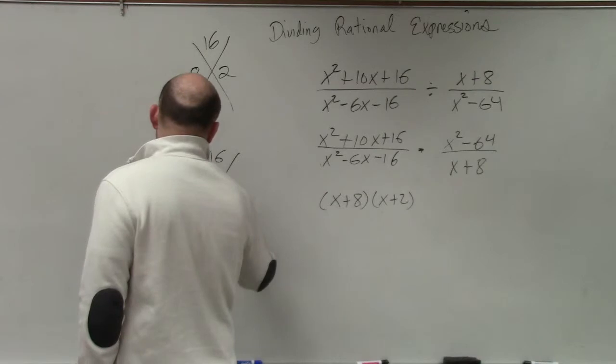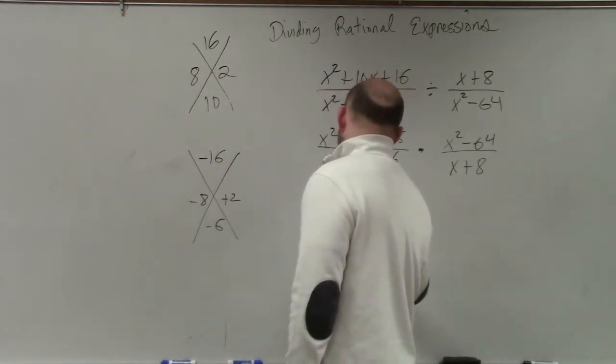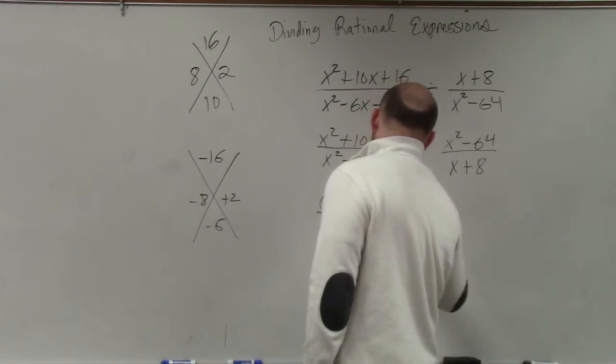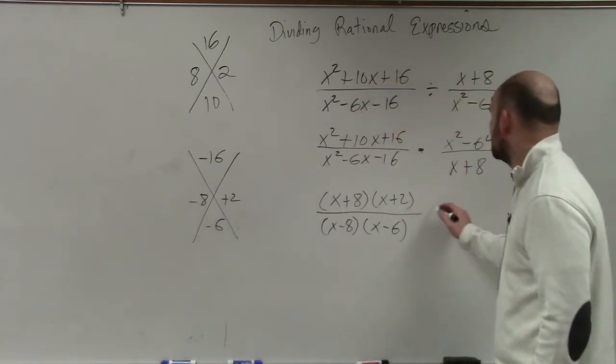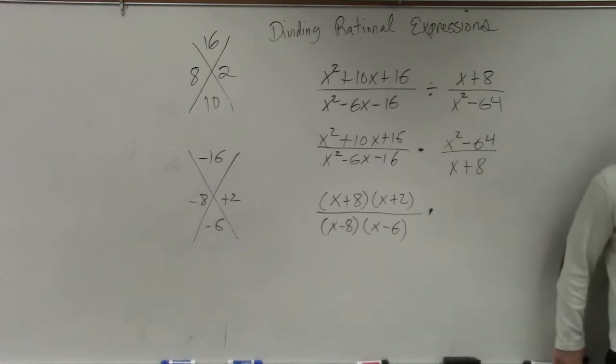8 and 2, but which one's negative? If they add to give you negative 6, then the negative 8. Then the 8 should be negative. So the denominator gets factored into x minus 8 times x minus 6 times x squared minus 64. Does anybody remember the factoring technique of this, what we would use whenever you have two terms and you're factoring it?